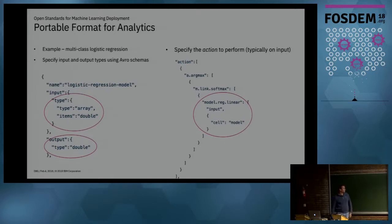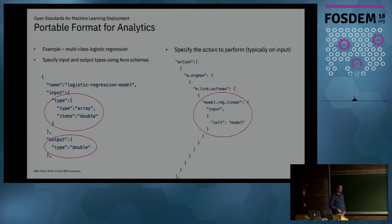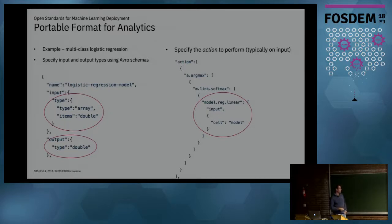For producing PFA documents you'll typically use Python or R; for scoring you're probably going to use Java, or if you really want performance maybe C++, Go, or something like that. The JSON is not really meant for human readability — it makes it easy for machines to generate, so it's a bit verbose.